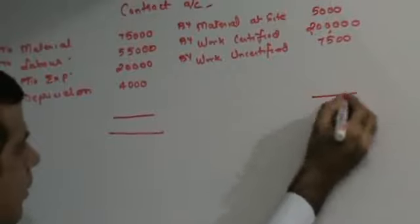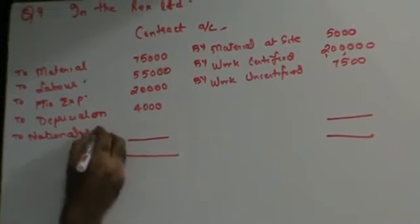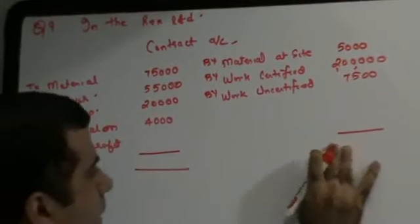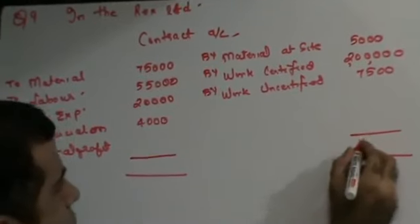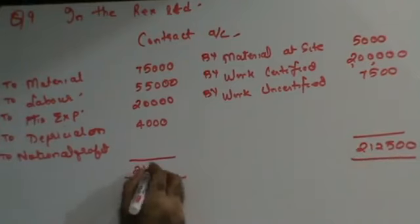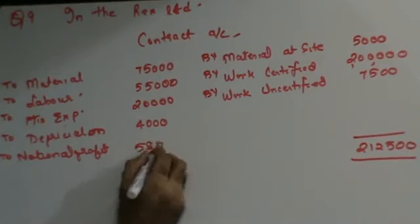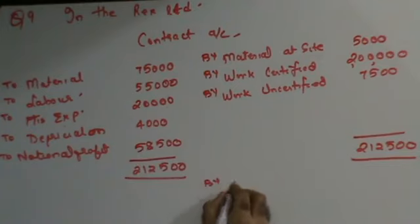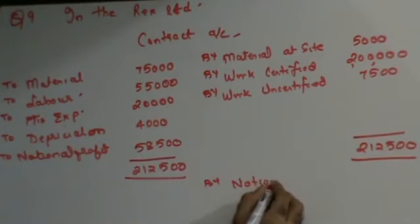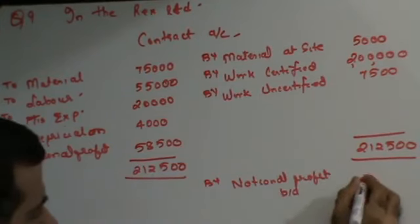Once you get this, now let's tally this. Now you tally your contract account to get notional profit. So now please help me tally this. 2,12,500. This is 58,500. Bring the notional profit down, by notional profit, 58,500.